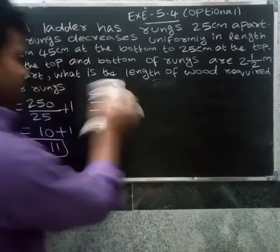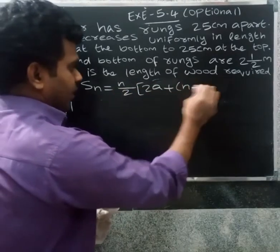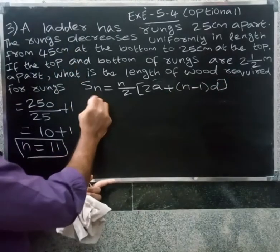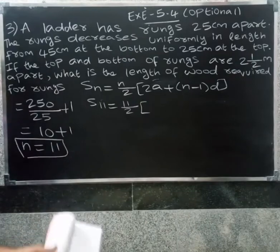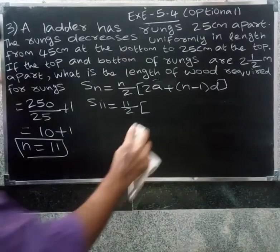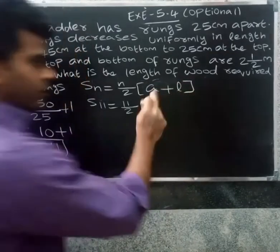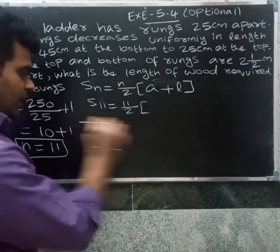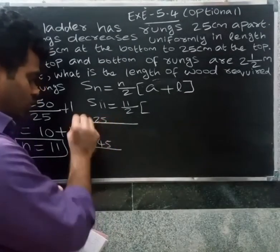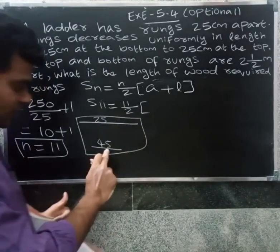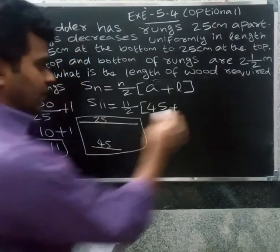So we use the formula: S-n equals n by 2 into (a plus l). Here n equals 11, the first rung a is 45 centimeters, and the last rung l is 25 centimeters. So S-n equals 11 by 2 into (45 plus 25).